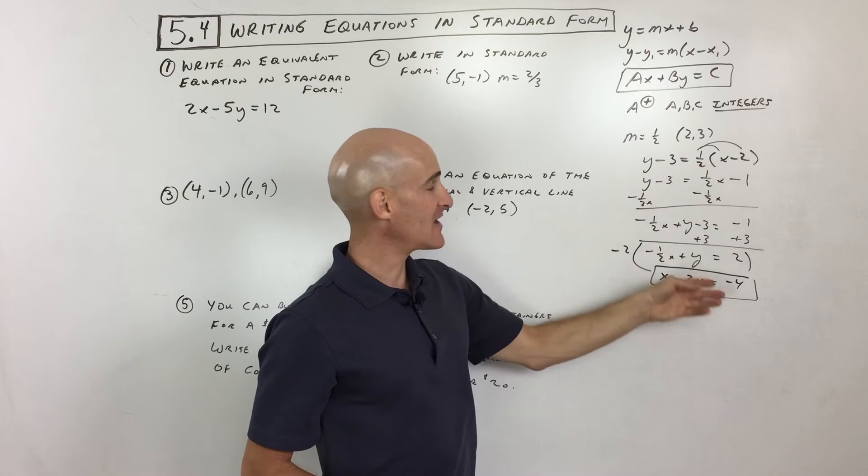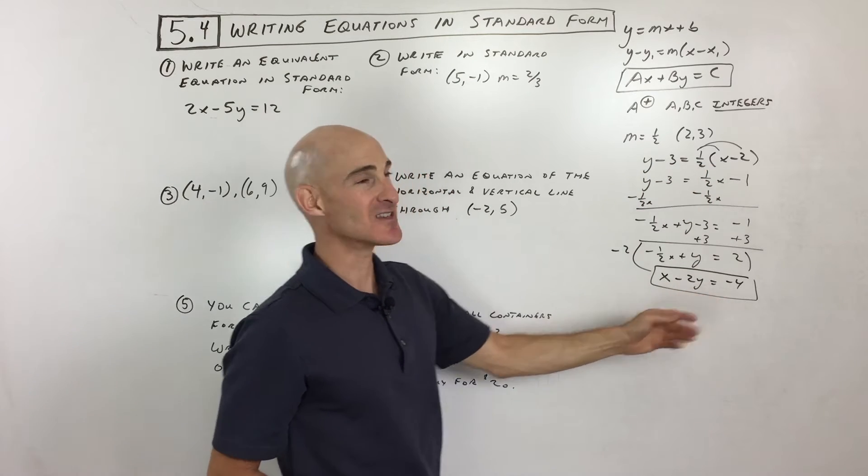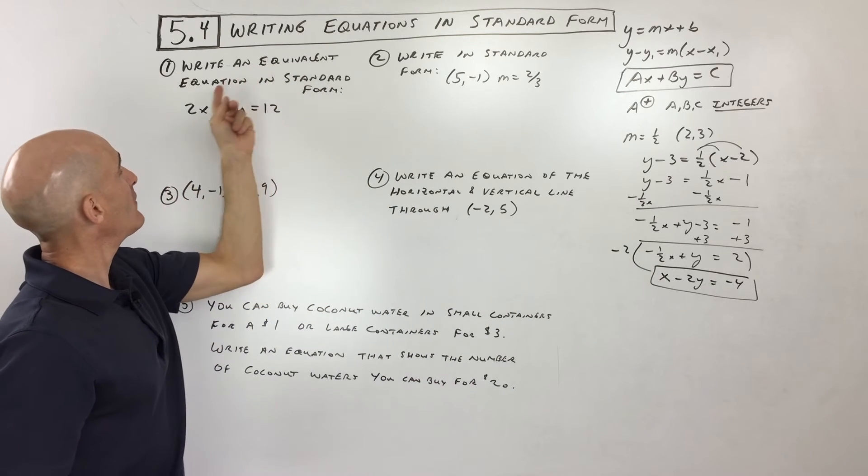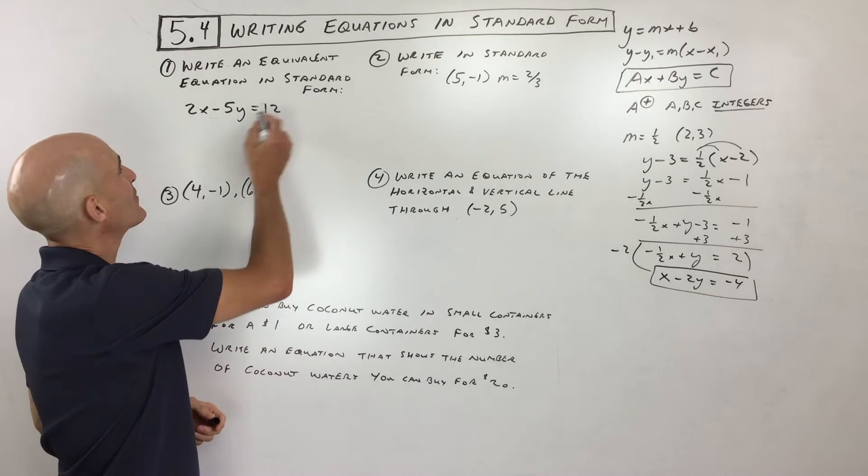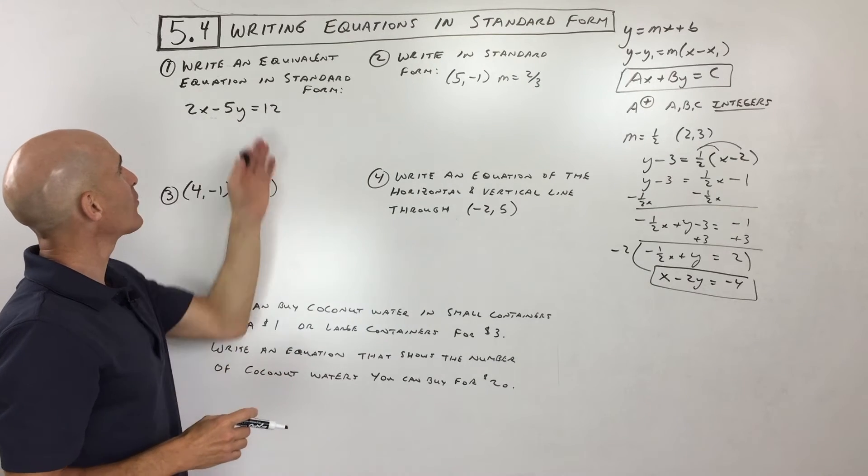This is functional, but it's not as condensed and easy to read as this is, right? So let's go over to number 1. So it says, write an equivalent equation. That's a tongue twister in standard form.